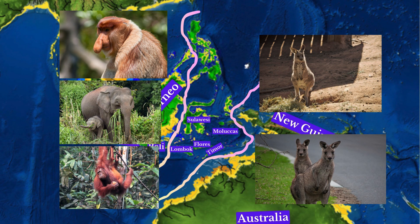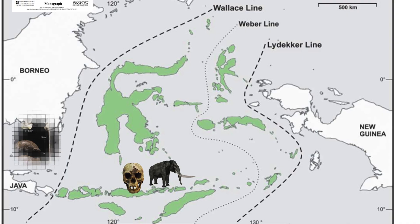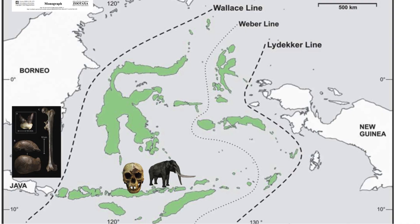Asia developed placental mammals while Sahul hosted marsupials. The island of Flores revealed evidence of Stegodon elephants and Homo floresiensis. Southeast Asia's human habitation history of nearly two million years also includes Homo erectus and potentially Denisovans.